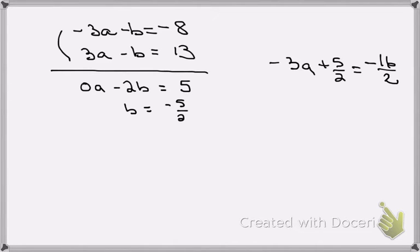Minus 3a is equal to minus 16 plus 3, that's minus 13 halves, so this tells me a is equal to 13 over 6.